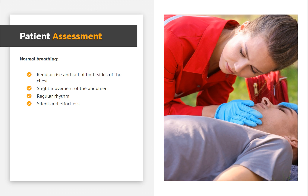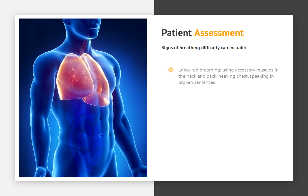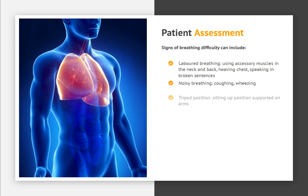Patient Assessment. Normal breathing signs include: slight movement of the abdomen, regular rhythm, and silent and effortless breathing. Signs of breathing difficulty can include: laboured breathing — using accessory muscles in the neck and back, heaving chest, speaking in broken sentences; noisy breathing — coughing, wheezing; tripod position — sitting up supported on arms; and cyanosis.